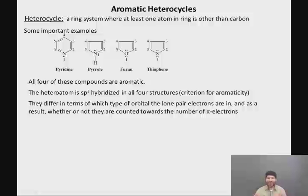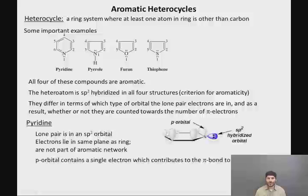But these structures differ in terms of which type of orbital the lone pair electrons are in, and as a result, whether we're going to count those lone pair electrons towards the number of pi electrons for aromaticity according to Huckel's rule or not. So let's start by looking at pyridine.